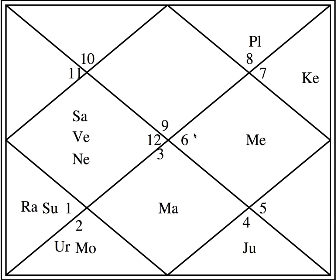If you do not know what exaltation is, please watch the earlier videos. Now the eighth house undoubtedly has Jupiter sitting in it, but we need to see where the lord is placed. The sign is number 4, Cancer, ruled by Moon. Moon is placed here with Uranus in sign number 2, Taurus, its exaltation. Counting: 1, 2, 3, 4, 5, 6 — Moon is in the sixth house. So the eighth house lord is sitting in the sixth house in the sign of Taurus, its exaltation sign.